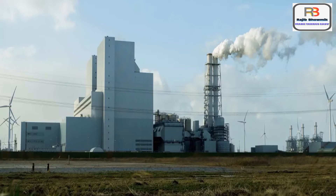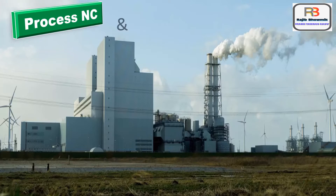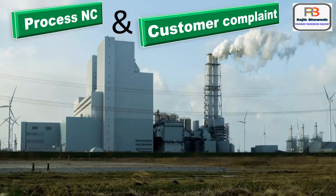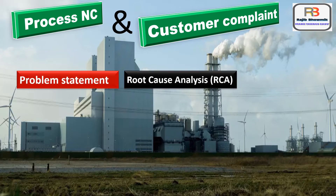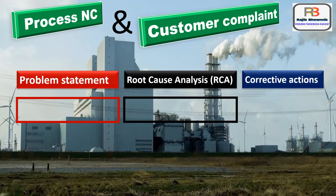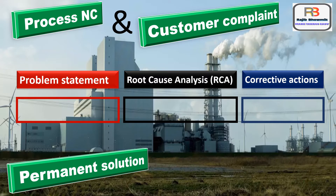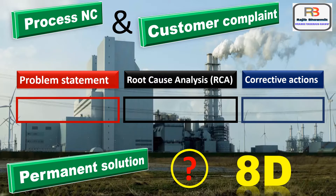In any regular manufacturing or service industry, whenever any process non-conformity or customer complaint occurs, the normal practice we follow is: what is the problem statement, then what is the root cause analysis (RCA), and what are the corrective actions. But after doing all these things, there is no assurance that the same will not re-occur — that is a big question on permanent solution. So for a permanent, assured solution, 8D is needed.